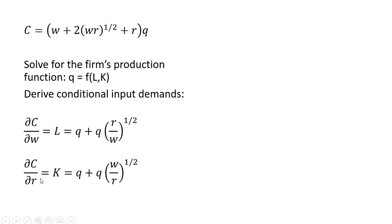The partial derivative of the cost equation with respect to the price of capital, or R, gives us the conditional input demand for capital, again conditional on the firm's output Q. And we get this result.